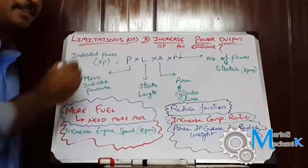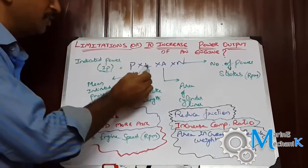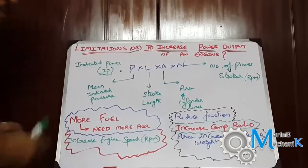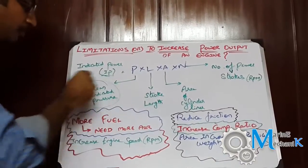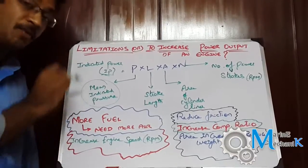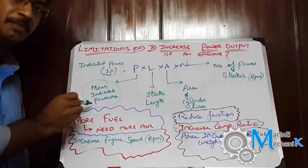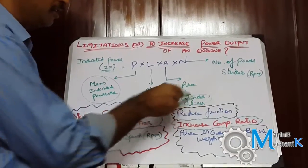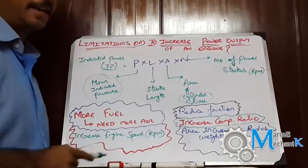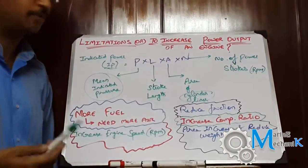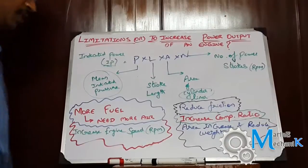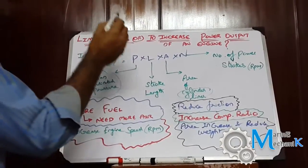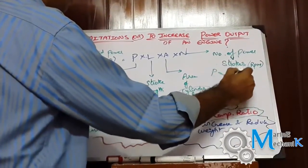By now we all know the formula: Indicated Power (IP) = P × L × A × N, known as the PLAN formula. I'm not going to include unit conversion factors. P stands for mean indicated pressure — not mean effective pressure. L is the stroke length, A is the area of the cylinder liner (not the piston area), and N depends on whether it's two-stroke or four-stroke — the RPM of the engine. Power is directly proportional to P, L, A, and N.